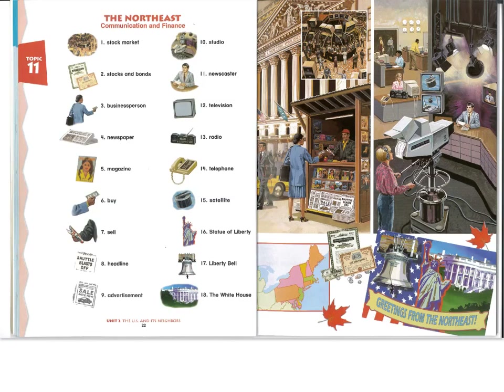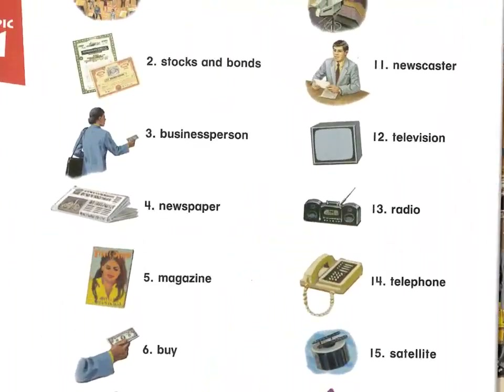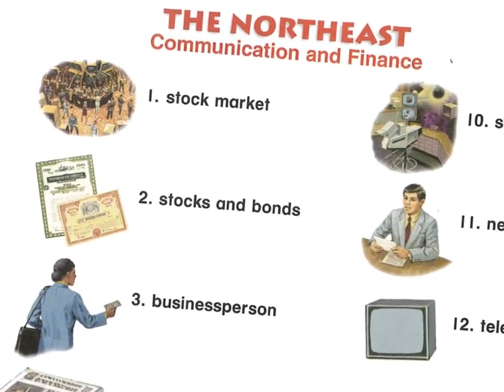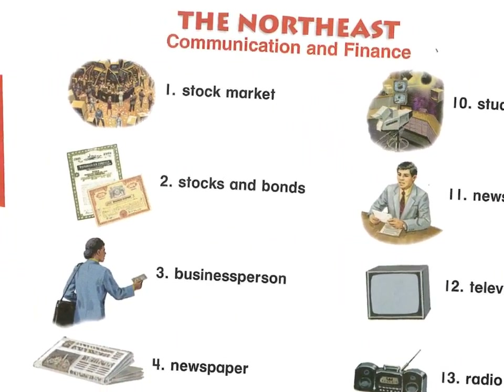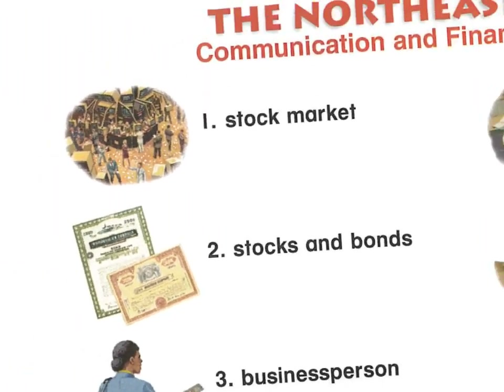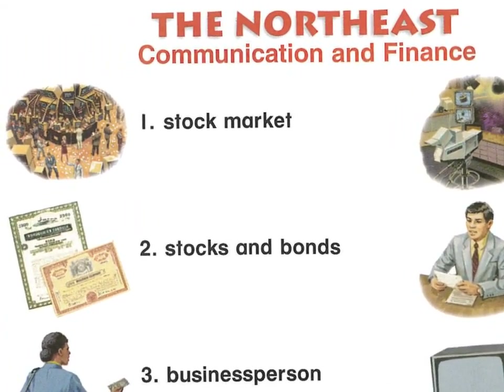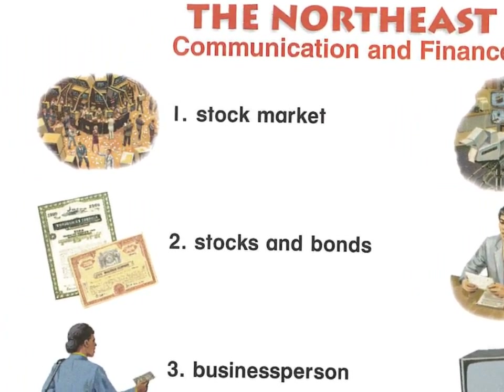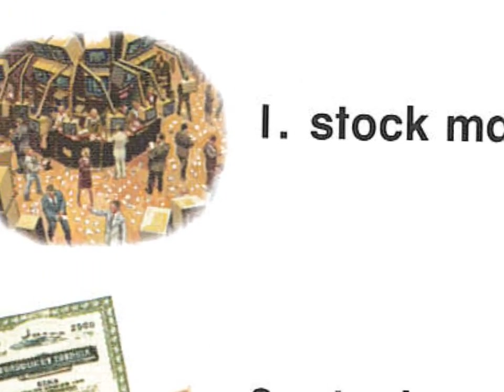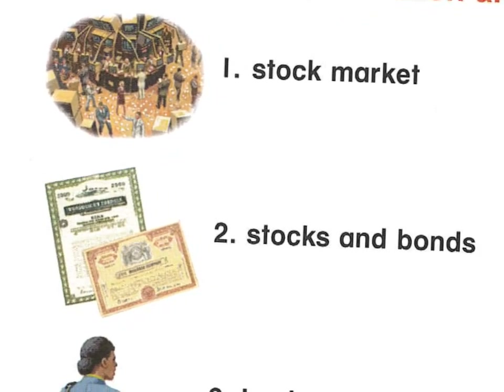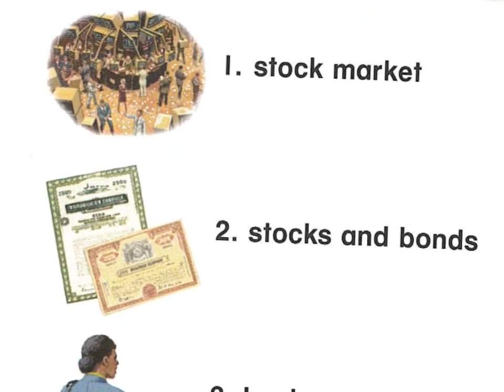Now we're going to look at some regions of the United States and what those regions are known for. The northeast is known for communication and finance. Finance is money — this first picture is of the stock market. Stocks and bonds have to do with investing money in companies or in governments and getting interest back or earning money on the money you invest.